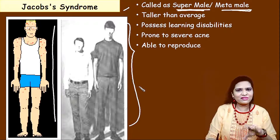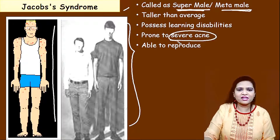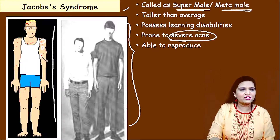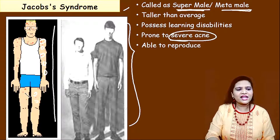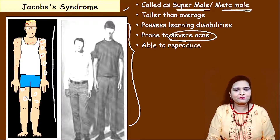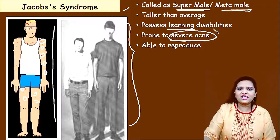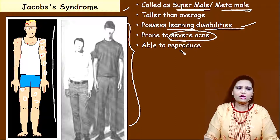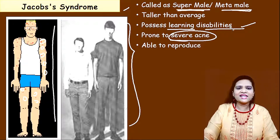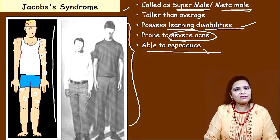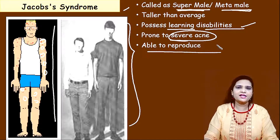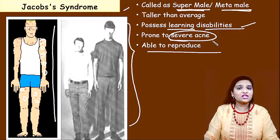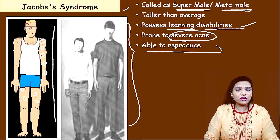Not only that — they will have more acne on their skin. They have learning disabilities — their learning capacity is not as fast as normal men. But they are able to reproduce: they have spermatogenesis and can participate in sexual reproduction and give birth to offspring.